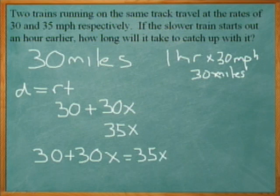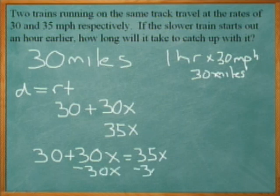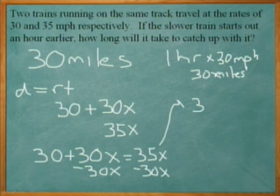Now I want to get the x's to the same side, so I subtract 30x from both sides. Alright, and that's going to leave me 30 on the left-hand side and 5x on the other side.